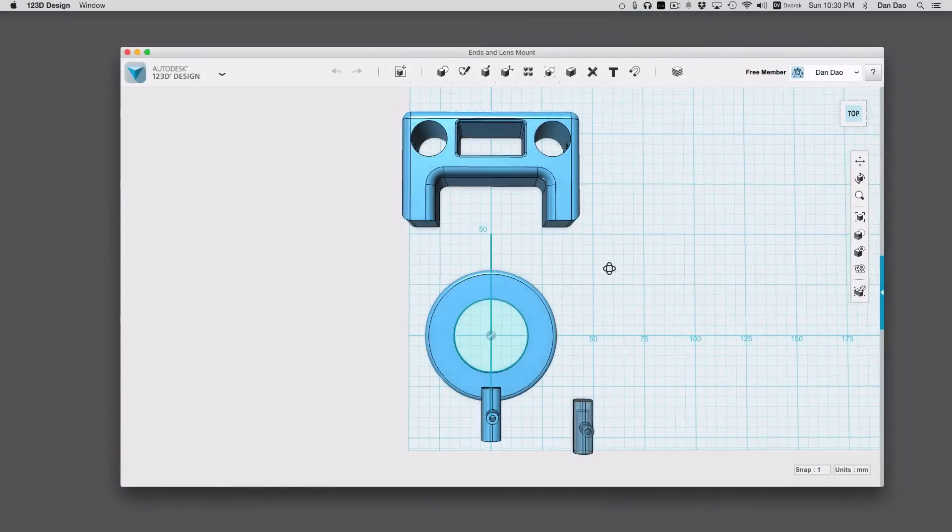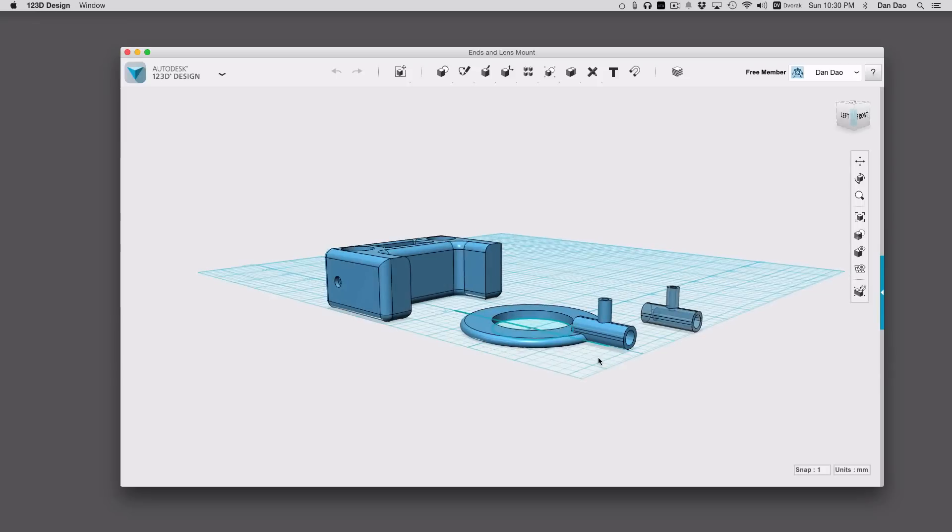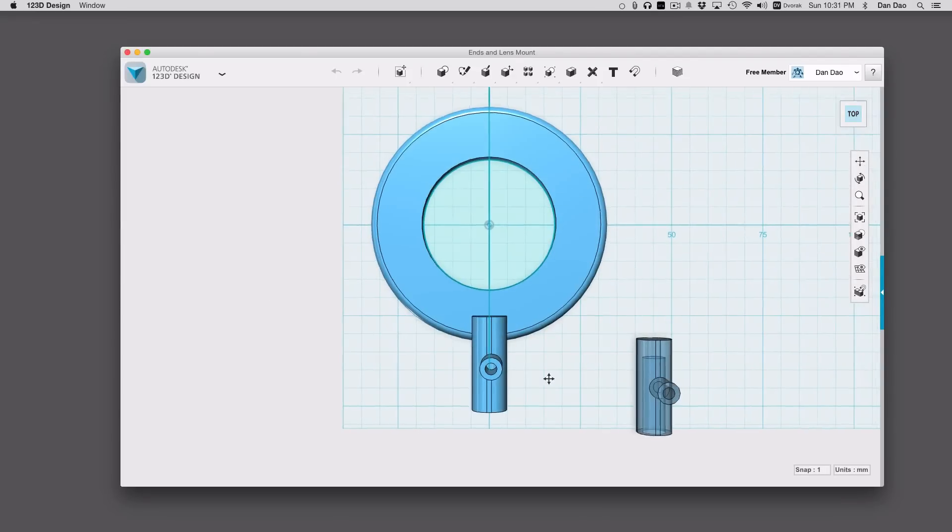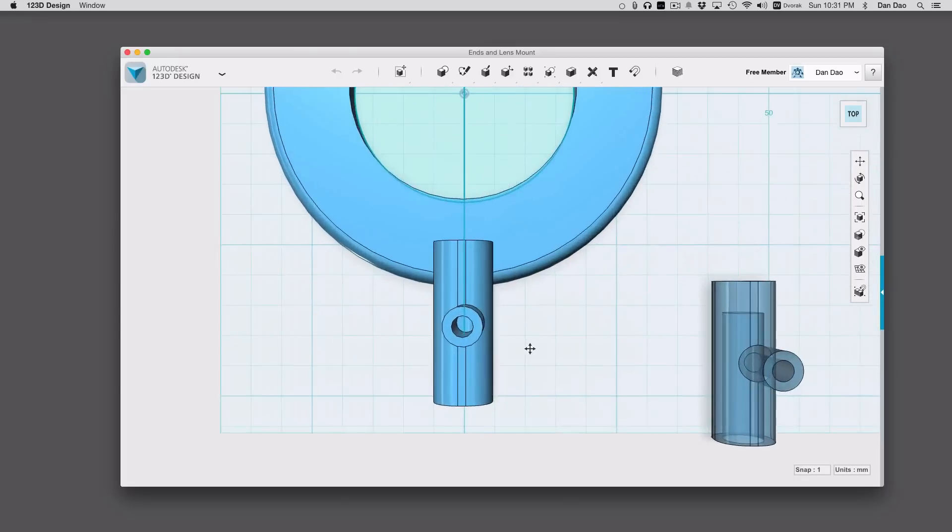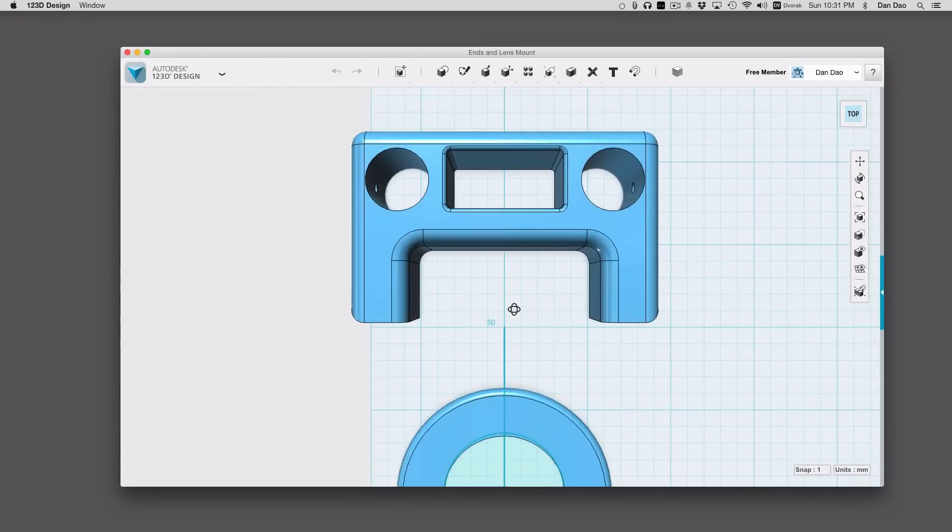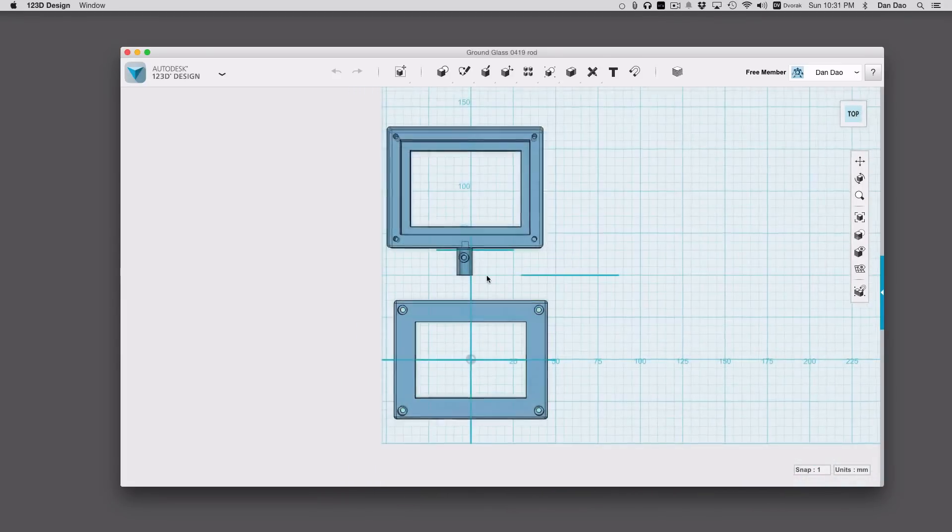Here's what it looks like in 123D Design—pretty simple. I broke the post out separately because I'm probably going to use it on a lot of other things. If I have to make a holder for a bigger or smaller lens, I can just put the holder onto that. Here are the ends—it's really simple, just a cube with cutouts.